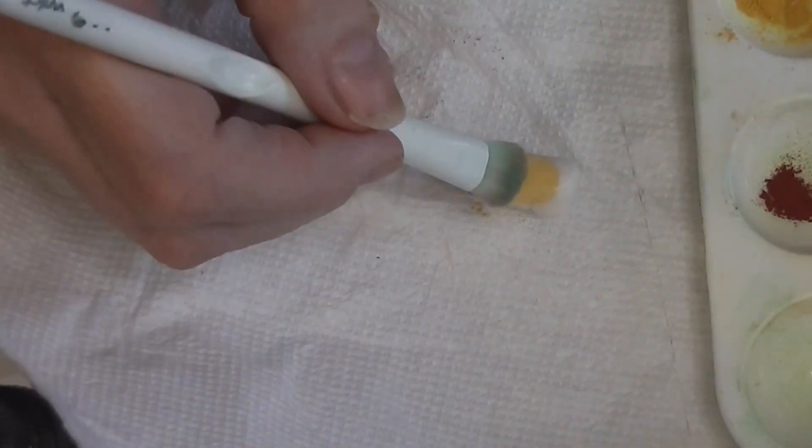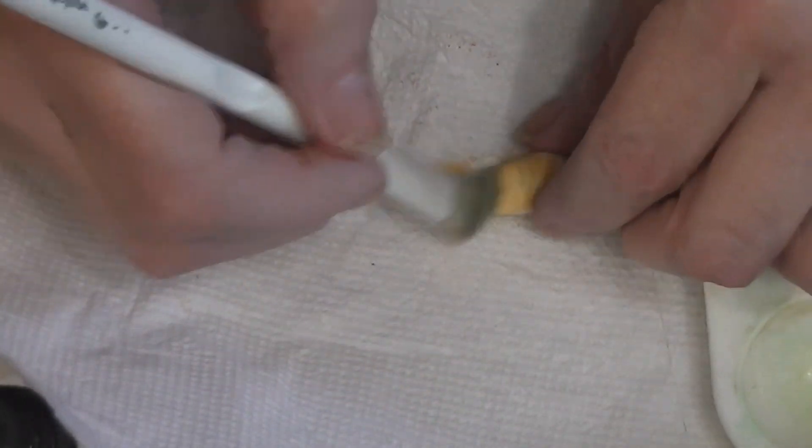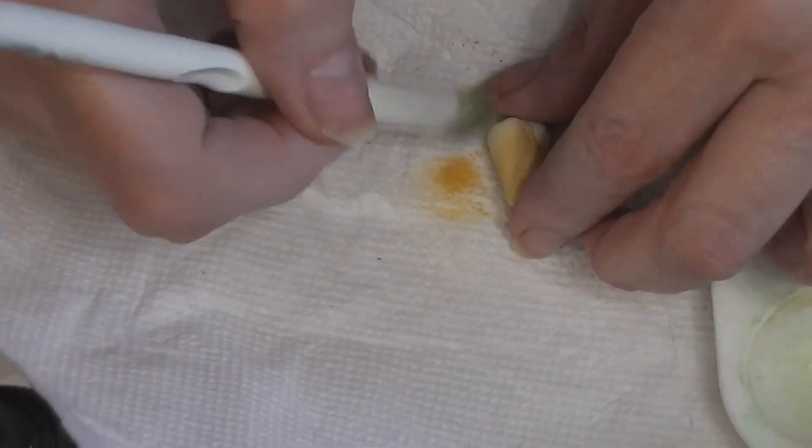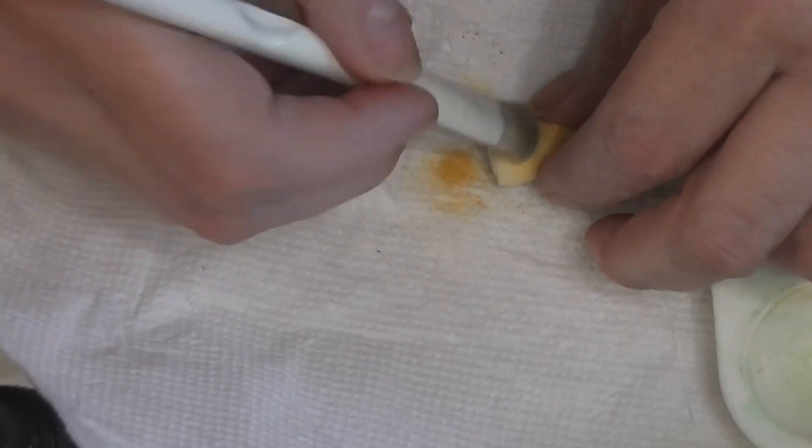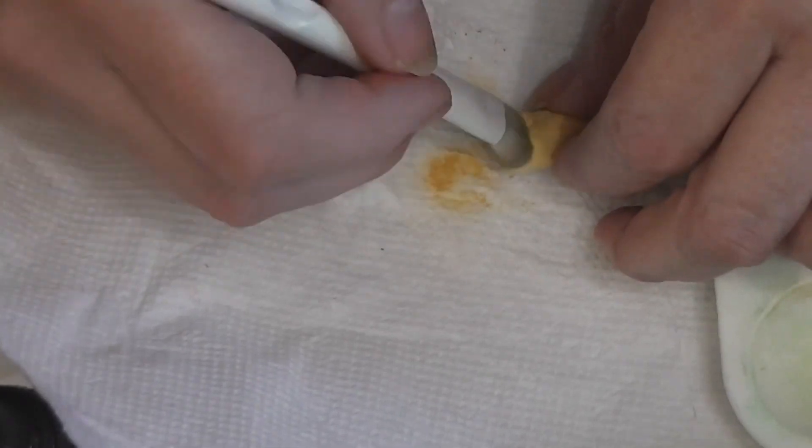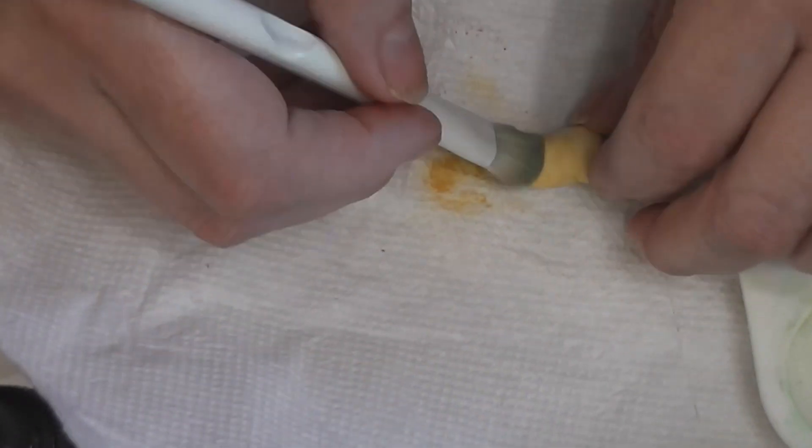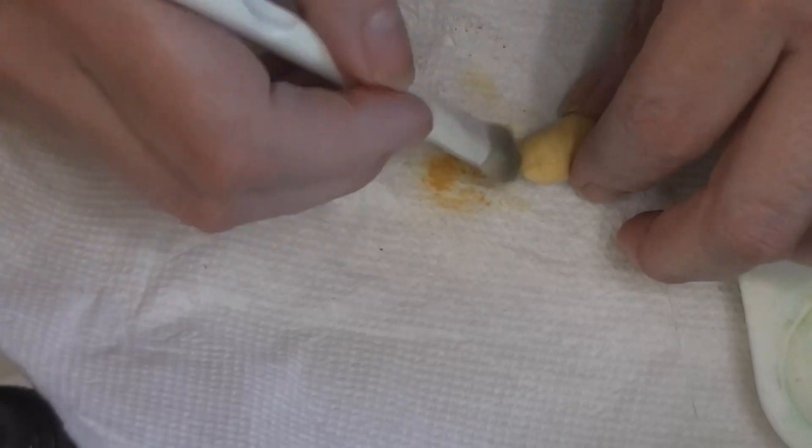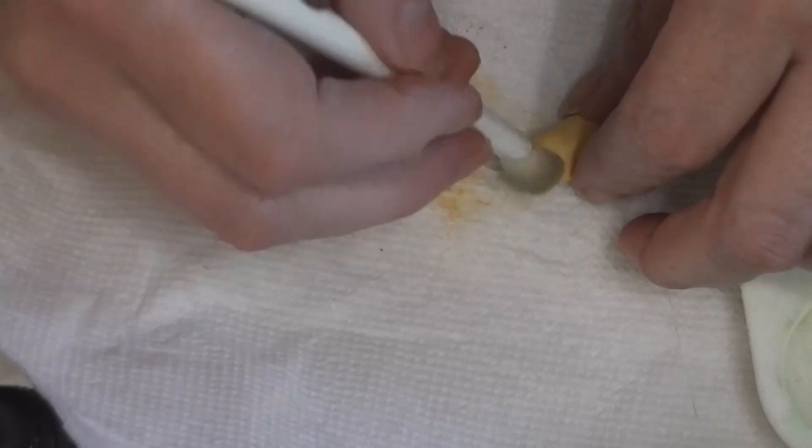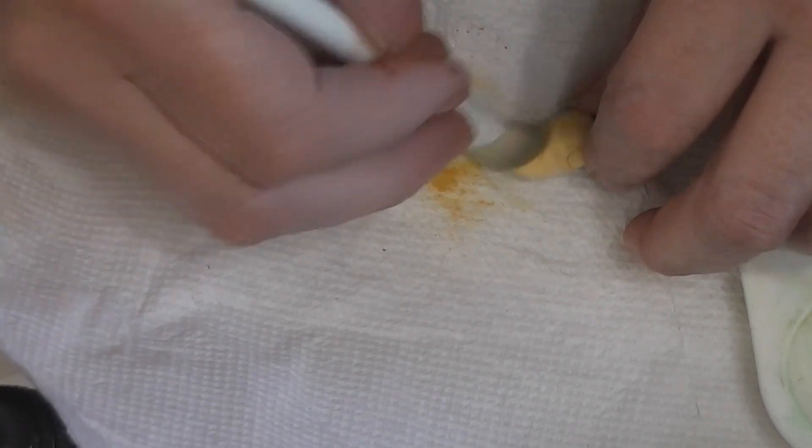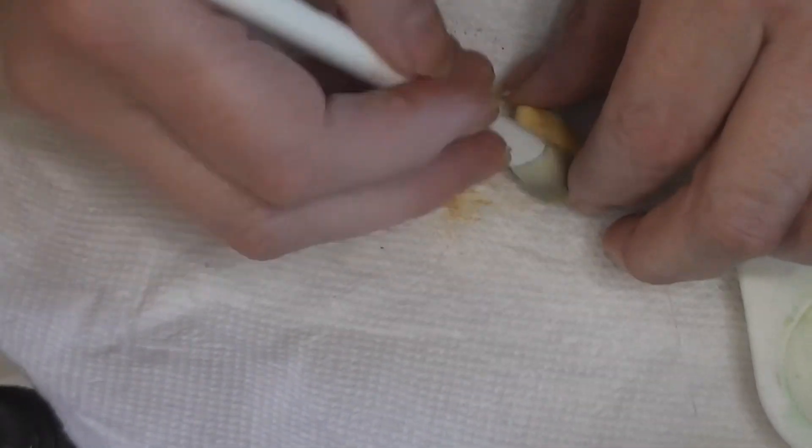So we really only need the top done and the ends because it's going to be down inside that pan. Like I said, this one is not designed to come out. In fact, I'm going to use liquid clay and glue it in.